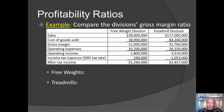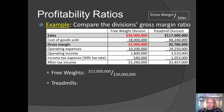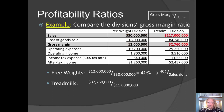Let's look first at the gross margin. For the free weights division, we take the gross margin and divide by sales revenue, and we get 40%. That tells us that the free weights division kept 40 cents out of each sales dollar as gross margin; the other 60 cents per dollar went to cover cost of goods sold. For the treadmill division, we take their gross margin and divide by their sales revenue, and that shows 28%.